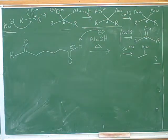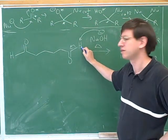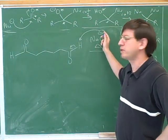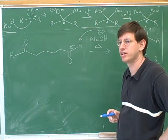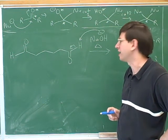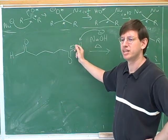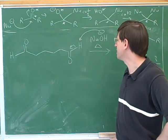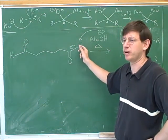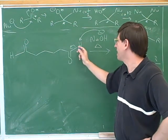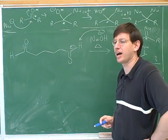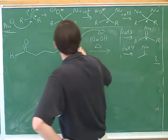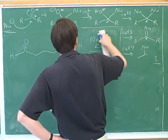Now, which proton is the base supposed to take? Who is it supposed to take the proton from? The carbon — that's right. But this is the carbonyl. This is that aldehyde hydrogen. We mentioned this is a common trap that can be fallen into — the aldehyde hydrogen generally doesn't do anything interesting. It's not the aldehyde hydrogen that's acidic; it's the alpha hydrogen. So that would be a mistake.